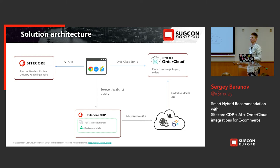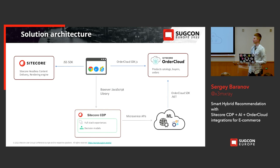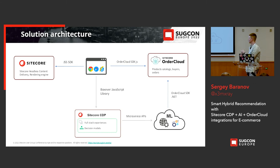Here you can see the list of frameworks we use for communication between our servers. OrderCloud communicates with the browser using the OrderCloud SDK for JavaScript, while our machine learning service communicates with OrderCloud using the OrderCloud SDK in .NET. Sitecore is headless using the JSS SDK with the browser, and of course CDP is integrated into the website using a JavaScript library. Sitecore CDP communicates with the machine learning service via simple Web API calls.